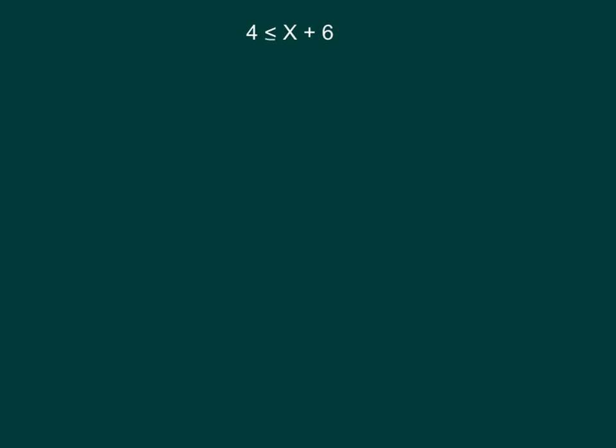The first thing we're going to do is get the variable by itself. We'll subtract 6 from both sides. And we'll get, on the left side, 4 minus 6 equals negative 2. Less than or equal to x and the plus 6 and minus 6 cancel each other out.